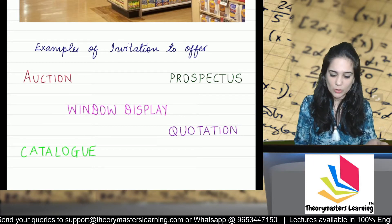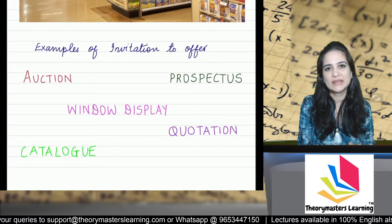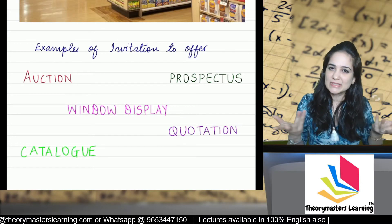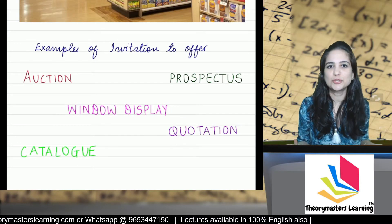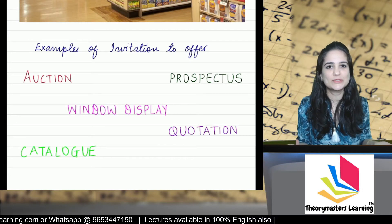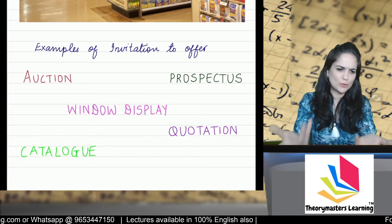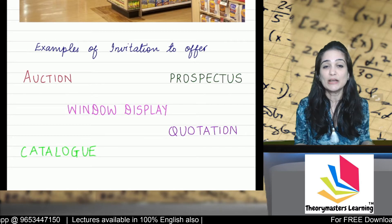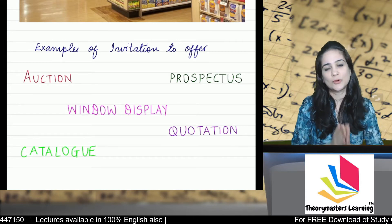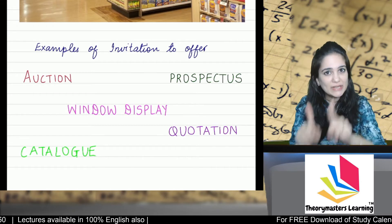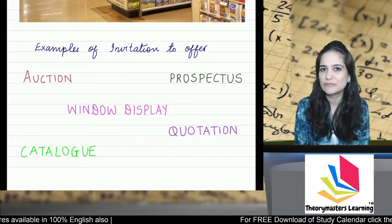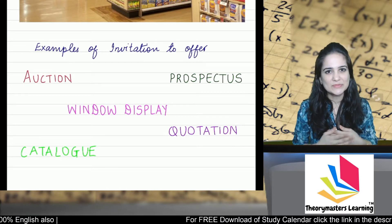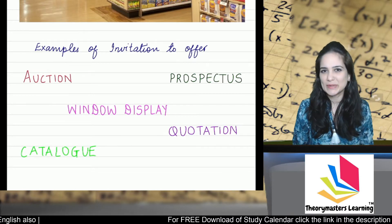Prospectus — when you go to a college for admission, the college gives you a prospectus. That prospectus is nothing but an invitation to offer. It says: here are all the courses we offer; tell us which course you want to enroll in. Then you submit an application — the student's application is the offer — which is accepted by the college. Then a contract is formed.